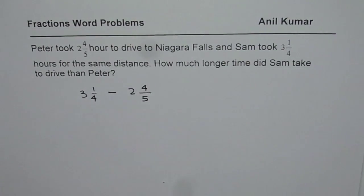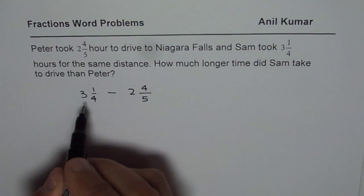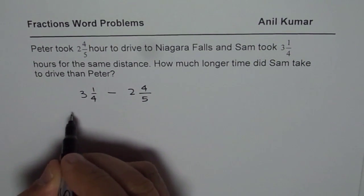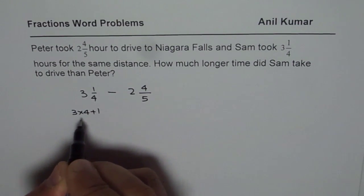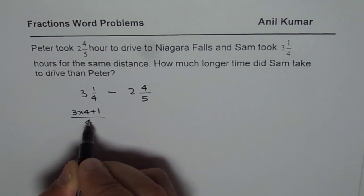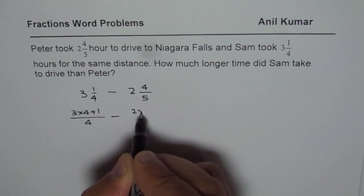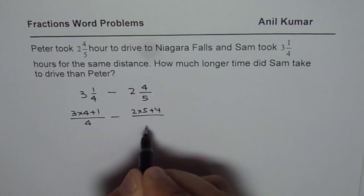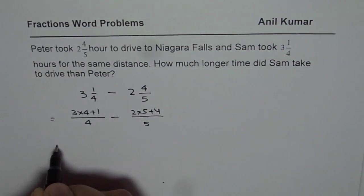Now how to calculate this difference? The first step is to write them as improper fractions. That means I will multiply 3 by 4 and then add 1. So I will do 3 times 4 plus 1 in the numerator, with denominator 4. Then 2 times 5 plus 4 in the numerator, with denominator 5. So that is going to be my first step.